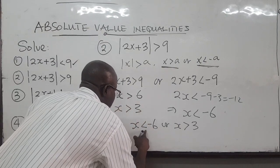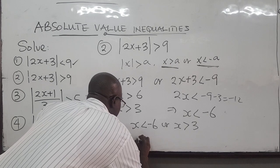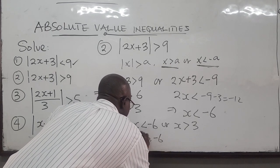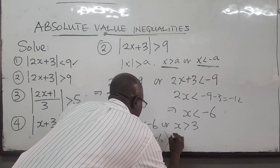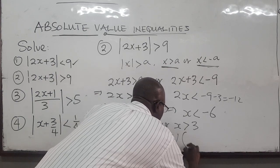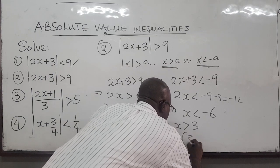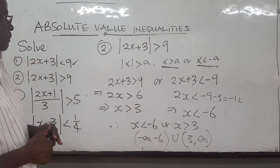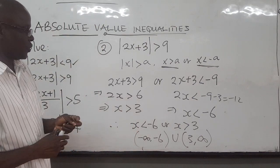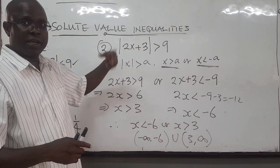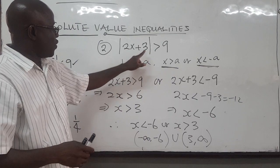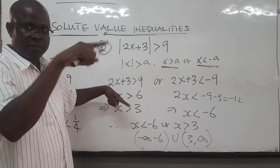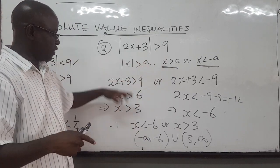You can also write the solution in interval notation: from negative infinity to negative 6, union from 3 to positive infinity. You can also try the same example with the second approach, where you square both sides and draw the quadratic, and look for the regions.